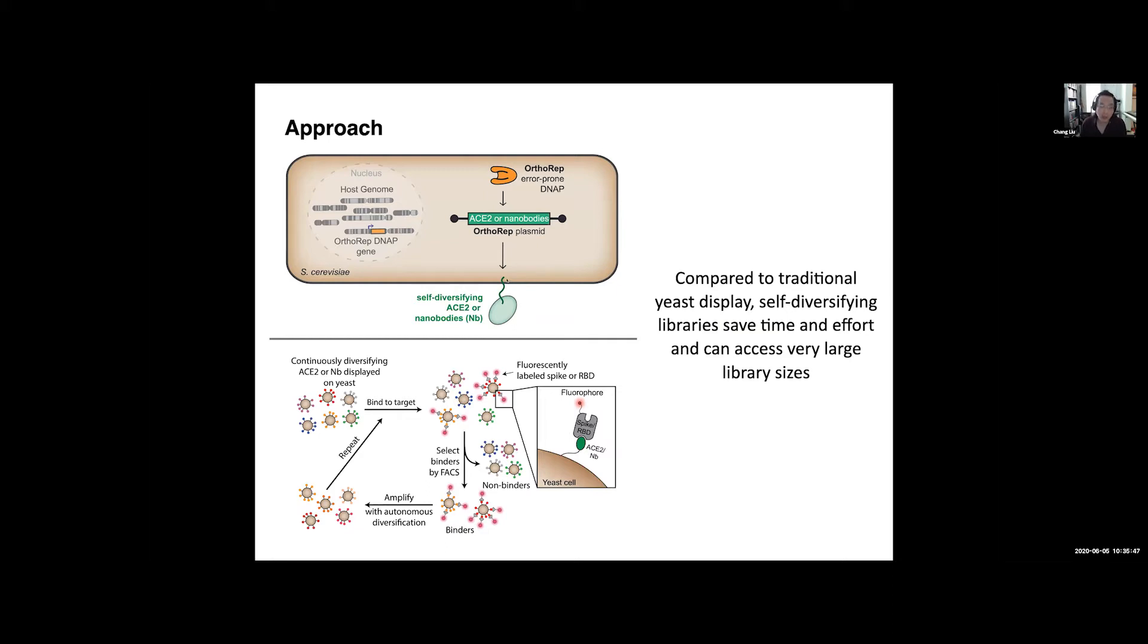And what we're doing in this project is we are encoding scaffolds that have privilege in binding coronavirus targets, such as ACE2, which is the receptor for coronavirus, or nanobodies. And we're displaying them on the surface of the cell.